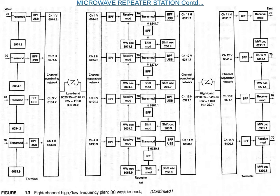Channel one and three are designated as V channels, meaning they are propagated with vertical polarization. Channels two and four are designated as H, or horizontally polarized channels. This is not a polarization diversity system — channels one through four are totally independent of each other, carrying different baseband information. The transmission of orthogonally polarized carriers further enhances the isolation between the transmit and receive signals.